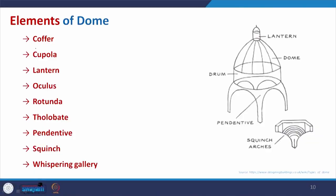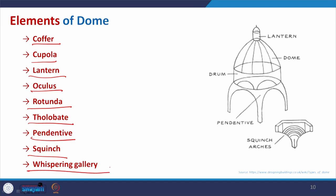Coming to the elements of a dome, here we have some components that are a little different from vault or arch components. We have: coffer, cupola, lantern, oculus, rotunda, tholobat, pendentive, squinch, and whispering gallery. The names are a little difficult to remember, but by looking at photos we will try to identify what each one is.